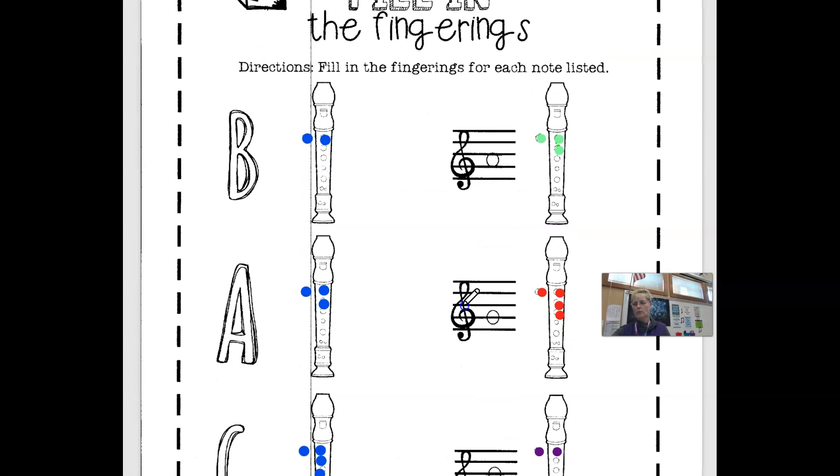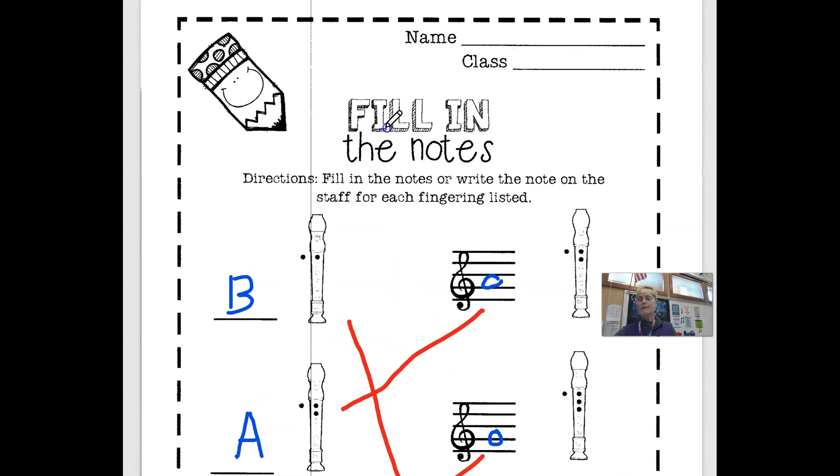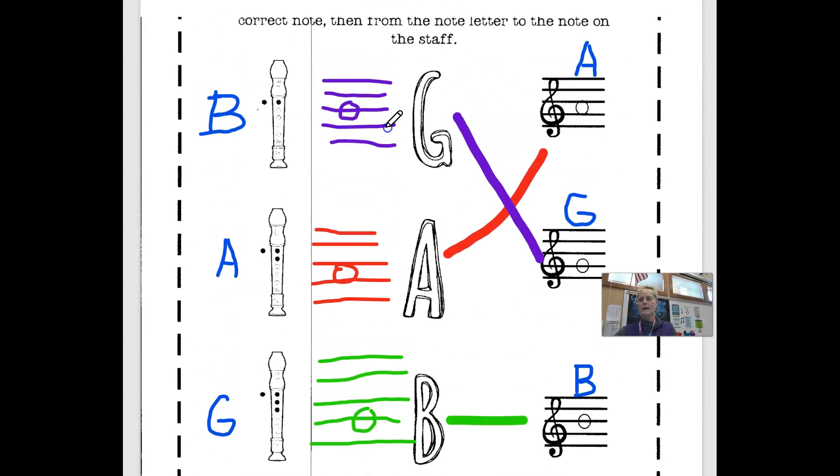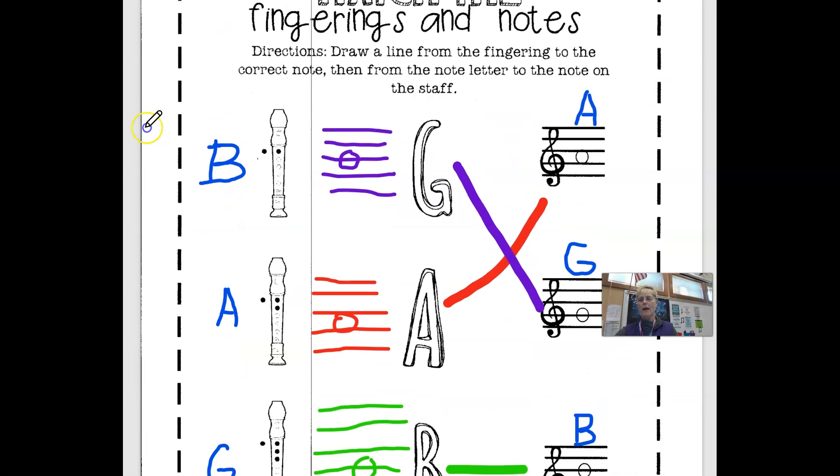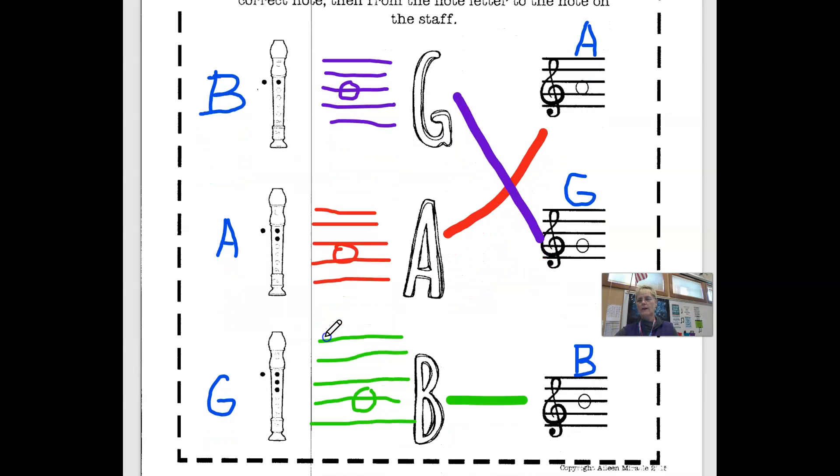So again, you're just supposed to write the fingerings on here. So hopefully you remember what a B is, and an A is, and a G is. And then the assignment is really easy to do. And then I just match here. And if you can't remember, you could draw this down right here.